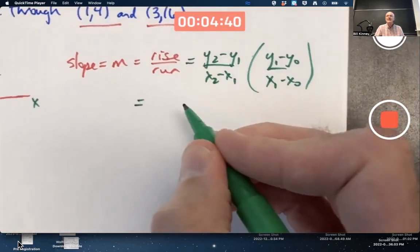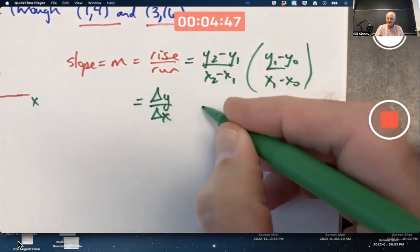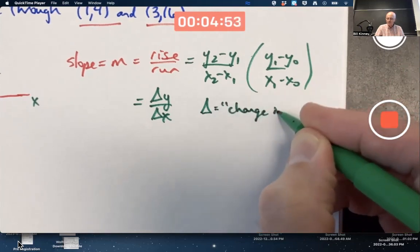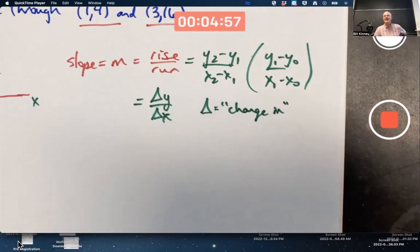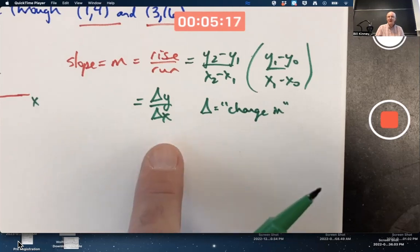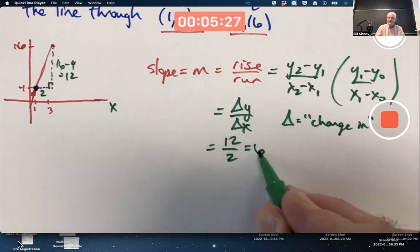We also want to get used to capital delta notation: delta Y over delta X, where the delta is shorthand for change in. That's not a triangle there, it looks like a triangle of course, but it's the capital Greek letter delta, very commonly used in science and engineering to represent change in. For this problem, that's 12 over 2, that's 6. The slope is 6.